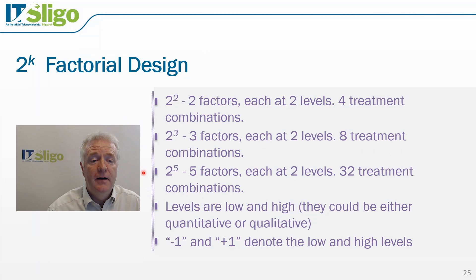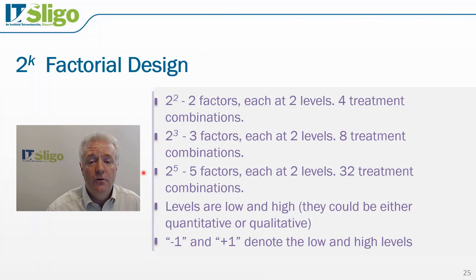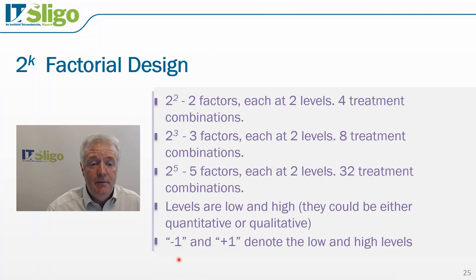Let's take the example of 2 to the power of 5. With this experiment, we can evaluate five factors where each factor is at two levels, and 2 to the power of 5 gives us 32, so there are 32 treatment combinations associated with this experiment. In a two-level design, the levels are referred to as high and low, and these can be quantitative or qualitative. More commonly, the notation minus 1 and plus 1 denotes the low and the high level.